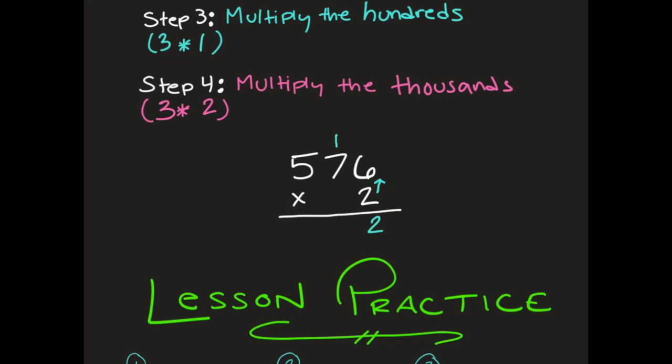And now I'm going to do two times my seven, which is in my tens column. Two times seven is 14 plus that one on top is 15. So I need to take the one from 15 and put it above my hundreds, and my five goes down here in my tens place.